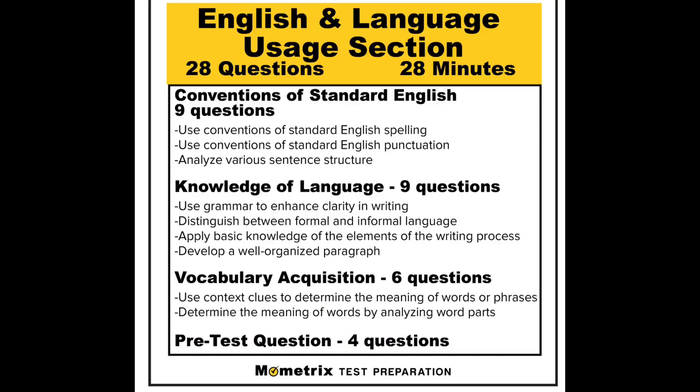First, let's talk about Conventions of English — you are going to have nine questions in this category. These questions cover grammatical aspects of the English language, how to organize a sentence, spelling, and punctuation. Some things you'll see include basic sentence structures: understanding active versus passive voice, different tenses like past, past perfect, present, and present perfect, as well as the perspective a writing is coming from — first person, second person, or third person.